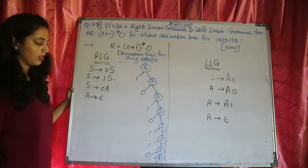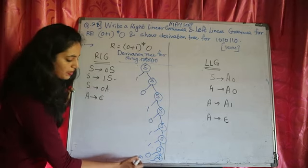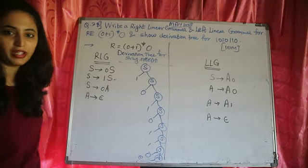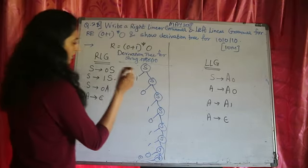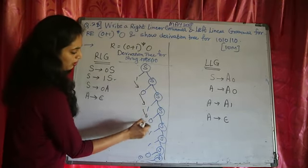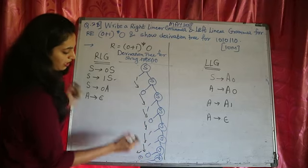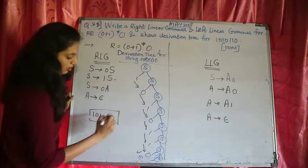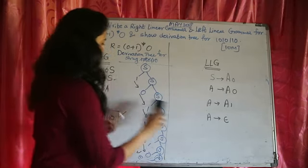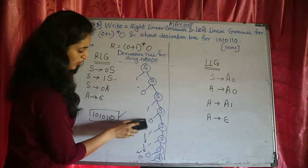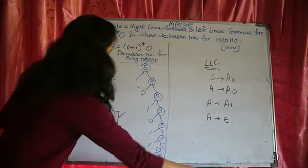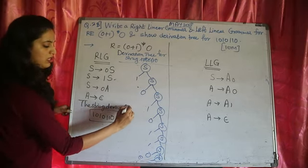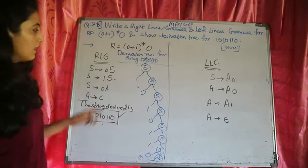Then finally A → epsilon. And here we are done with the derivation tree — it has stopped and given us the string we wanted. If we traverse the string and read it: 1, 0, 1, 0, 1, 1, 0 — which is the correct string. When writing in the exam, you need to make a final statement that the string derived is this. Derivation with respect to the right linear grammar is done.